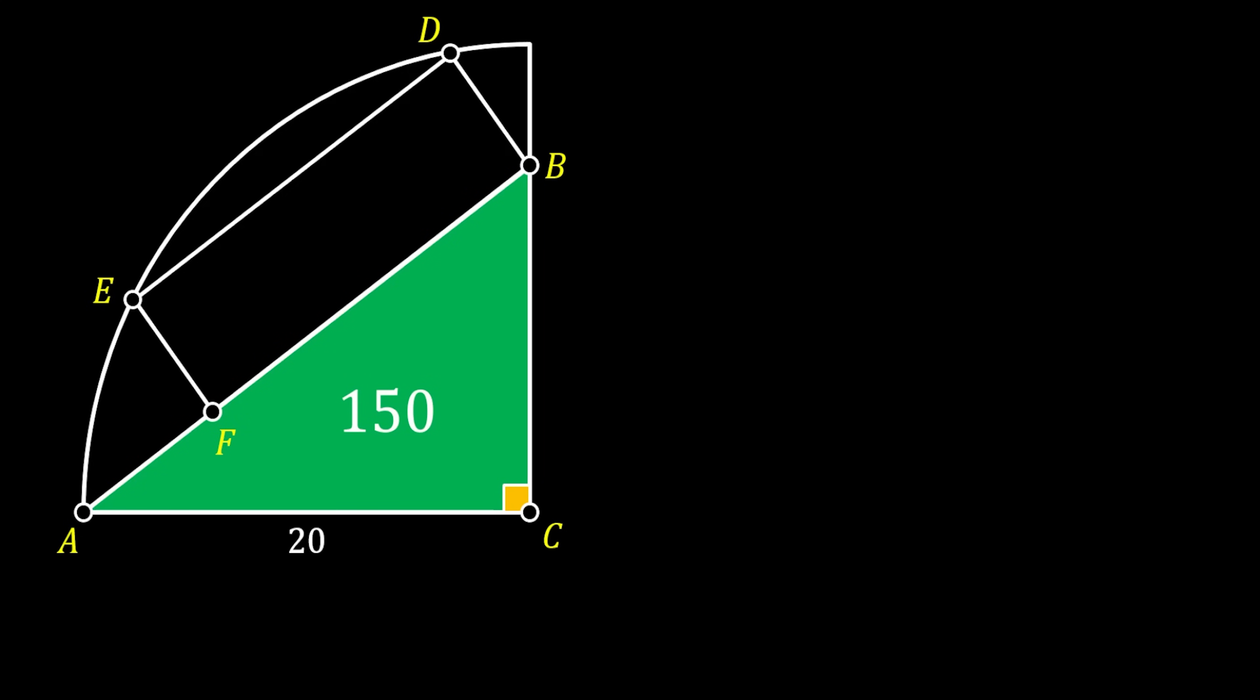So, we can say that the area of this triangle must be equal to half of the product of the base and the height, and since we know that the area of this triangle is 150 and the base is 20, we can substitute those values. Now, we can simplify a little bit, and we will finally get that the height of this triangle CB must be equal to 15.